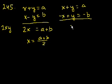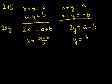That cancels out. So I get 2y equals a minus b, or y equals a minus b over 2.